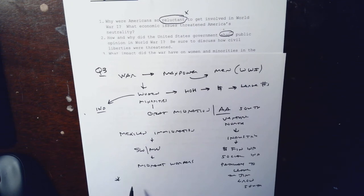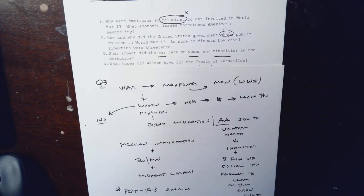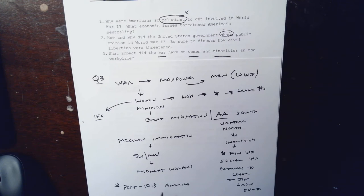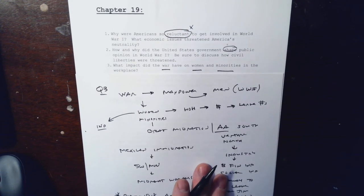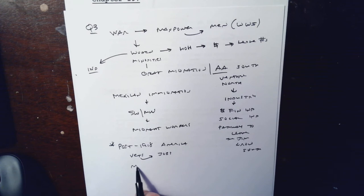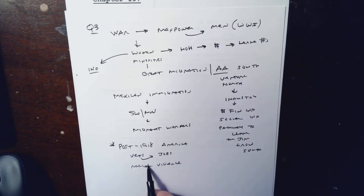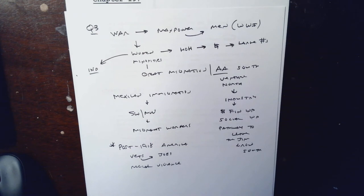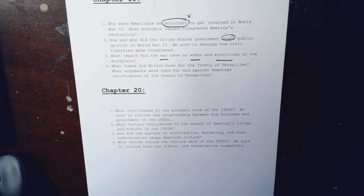At the end of this answer, talk about what happens in post-1918 America — that's key. The war ends and returning veterans want their jobs back. For all practical purposes, this leads to racial violence, not only in the North but also in the South. All of this is post-1918 America, and that's question three in a nutshell.